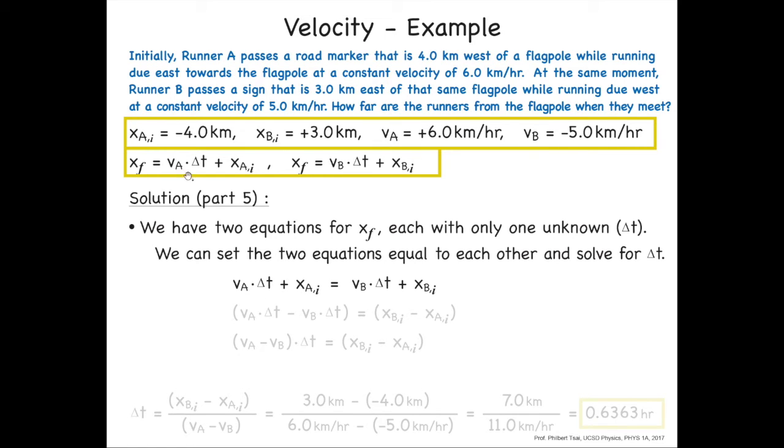So what that means is, since this is equal to xf and this is equal to xf, then this must equal that. So va delta t plus xai is equal to vb delta t plus xb initial. A little bit of algebra here. We're going to collect the delta t's, get the delta t's on the same side. We do that by taking this and subtracting vb delta t from both sides to cancel that out. And then we'll subtract xai from both sides to get rid of it on this side and bring it over on this side as a minus sign. We're going to collect the delta t's and pull them out, so we now have va minus vb all times delta t is just equal to xbi minus xai.